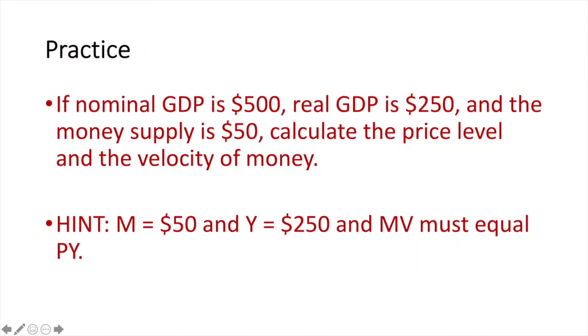Now let's practice what you've learned. Here's a challenging problem for you to try. If nominal GDP is $500, real GDP is $250, and the money supply is $50, calculate the price level and the velocity of money.